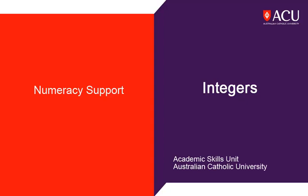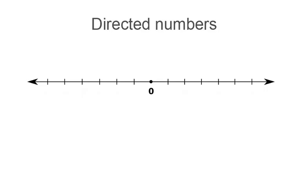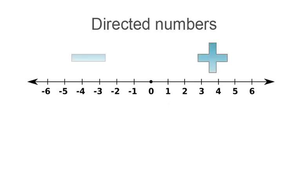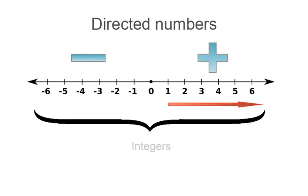Welcome to the Academic Skills Unit's guide to integers. Positive numbers and negative numbers are directed numbers, as they have both size and direction. As seen here on the number line, numbers get bigger as they move to the right and smaller as they move to the left. All of the counting numbers, both negative and positive, are called integers.